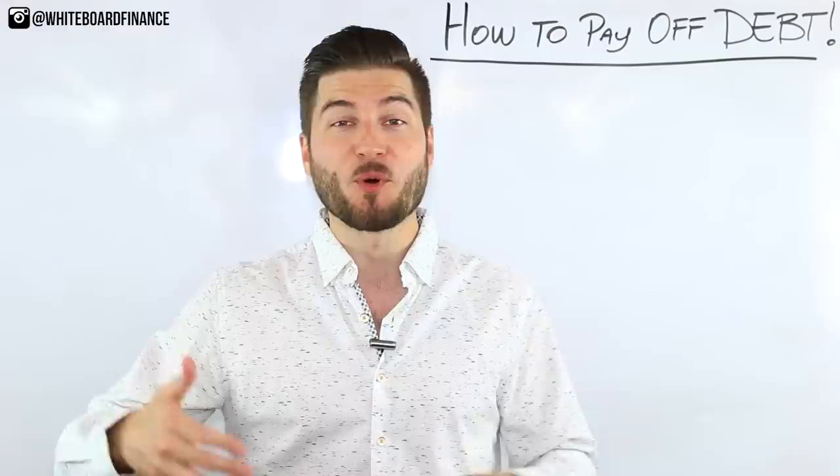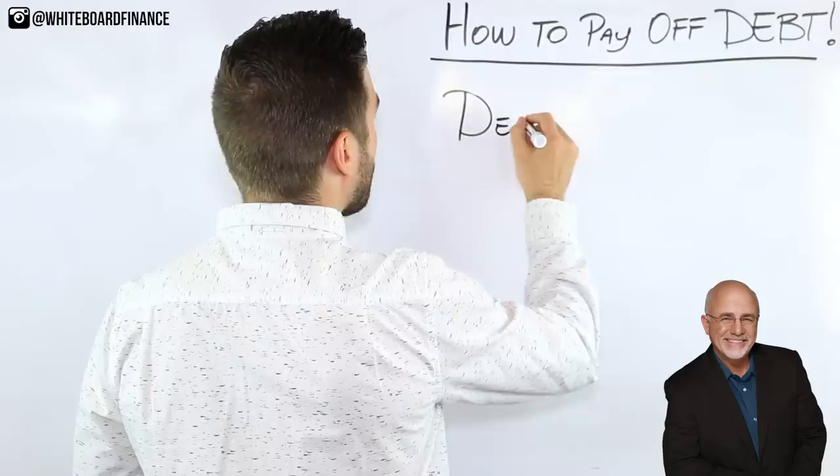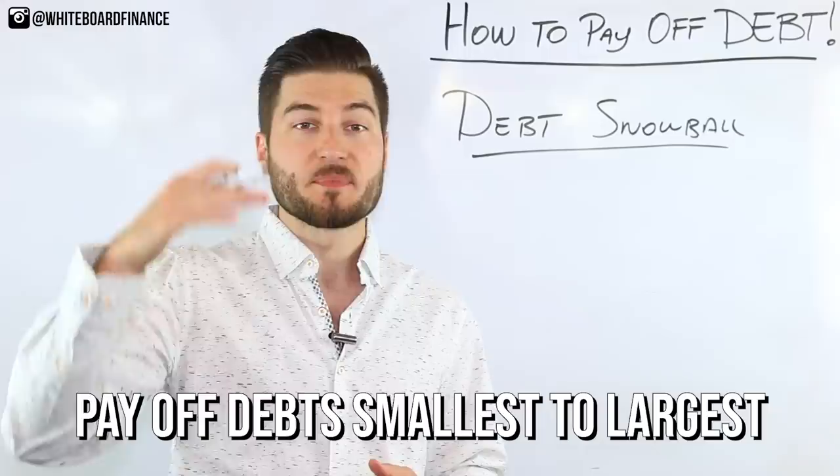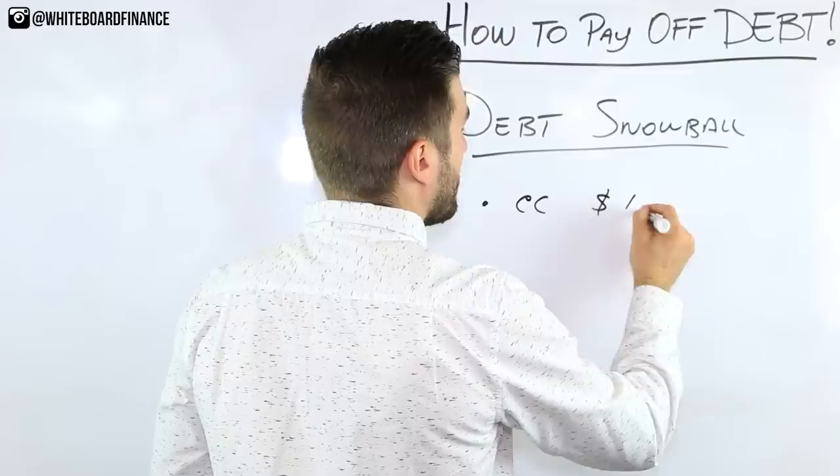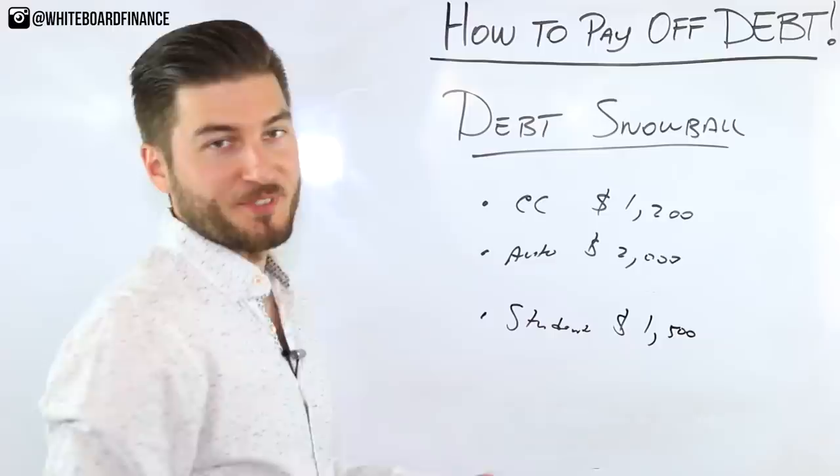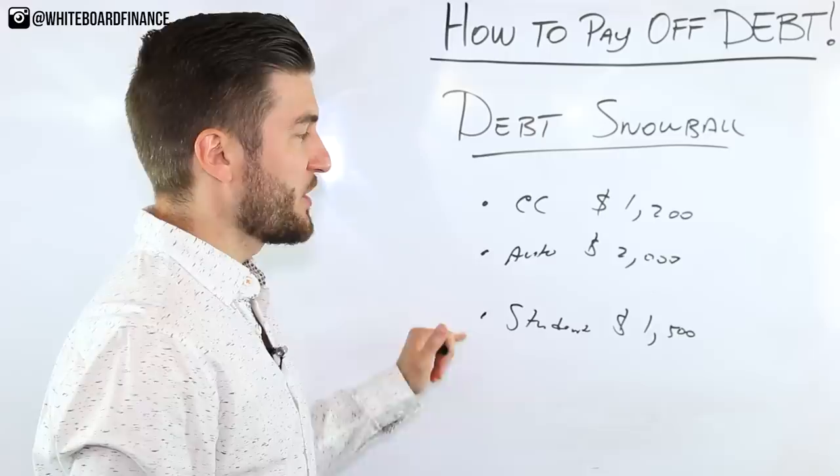If any of you have listened to Dave Ramsey, you may be familiar with the debt snowball. Essentially what the debt snowball is, is listing all of your debts in order from smallest to largest by dollar amount. So let's say for example you have a credit card that you owe $1,200 on, an auto loan that you owe $2,000 on, and student loans of $1,500. According to the debt snowball, you would order this from smallest to largest regardless of interest rate.